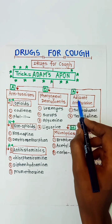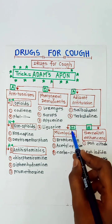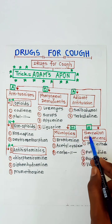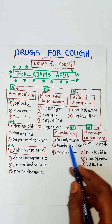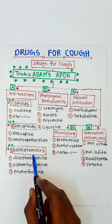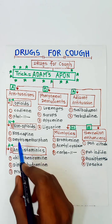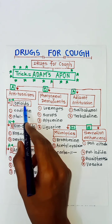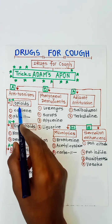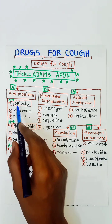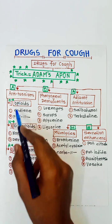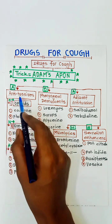Continuing the mnemonic: A is for adjuvant antitussives, M is for mucolytics, S is for secretion enhancers, and then A-PON — A for antitussives, O for opioids, and N for non-opioids. These are subgroups within antitussives.